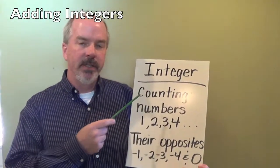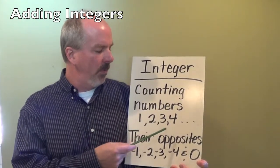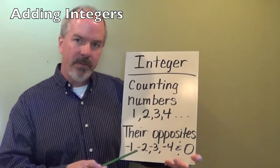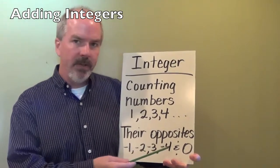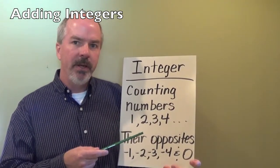Let's define what an integer is. An integer is counting numbers, 1, 2, 3, 4, opposites, which would be negative 1, 2, 3, 4, and 0. Some teachers, some textbooks say whole numbers. They're opposite to 0.